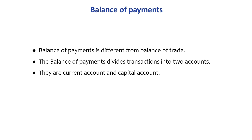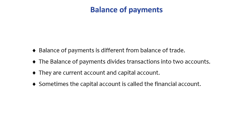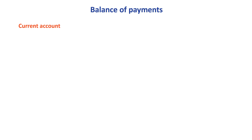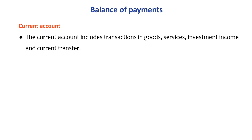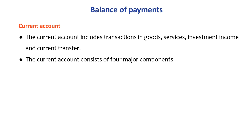In countries like India, the financial account is sometimes included within the capital account, so the capital account is also called the financial account. The current account includes transactions in goods, services, investment income, and current transfers. It consists of four major components.